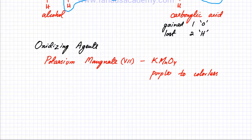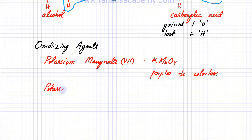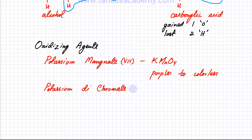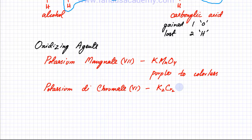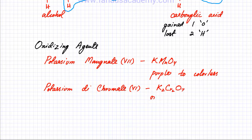Another oxidizing agent you need to remember is potassium dichromate(VI), with the formula K₂Cr₂O₇, where 6 is the oxidation state of chromium in this compound. If you use this oxidizing agent, the color change is going to be from orange to green.